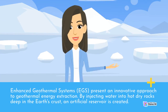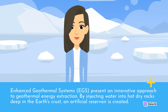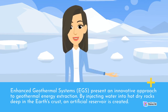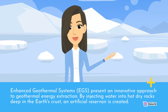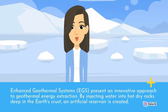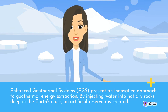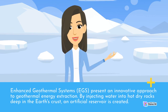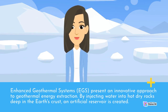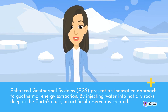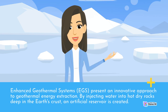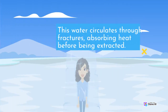Enhanced geothermal systems (EGS) present an innovative approach to geothermal energy extraction. By injecting water into hot dry rocks deep in the Earth's crust, an artificial reservoir is created. This water circulates through fractures, absorbing heat before being extracted.